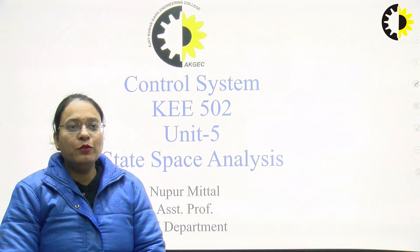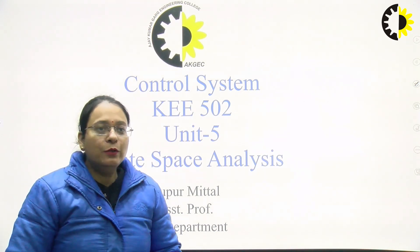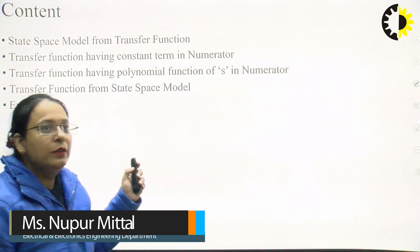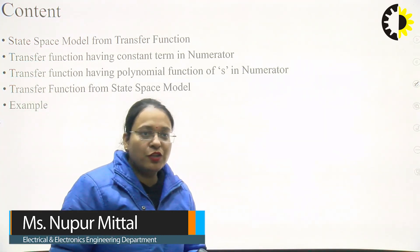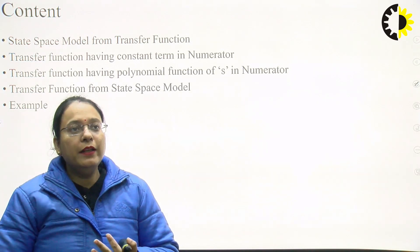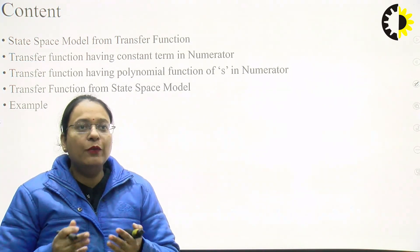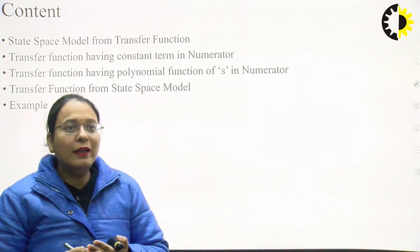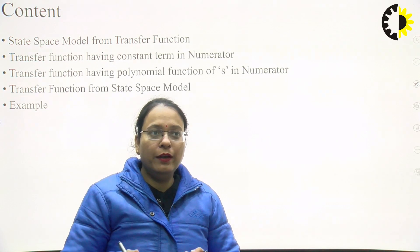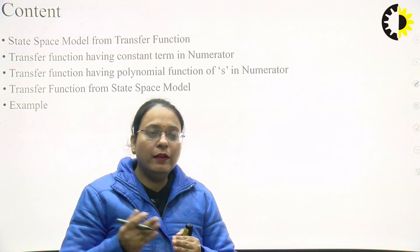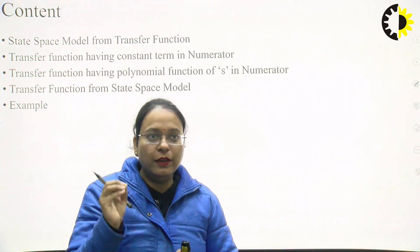Jai Hind everyone. Today I am going to talk about state space analysis. In today's lecture, I will cover how to get the state model from the transfer function and vice versa. Basically, to get the state space model from the transfer function, we have two types: one in which the transfer function has a constant term in the numerator, and another in which the transfer function has a polynomial function of s in the numerator.